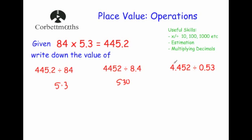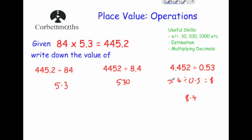And the last one: 4.452 divided by 0.53. Again, the answer will be linked to 84, and 0.53 is linked to the 5.3. I'll use estimation: round 4.452 to 4 and divide by 0.5. How many halves are in 4? There are 8 — so my answer is close to 8. Since the numbers relate back to 84, the closest I can get is 8.4, by placing the decimal point appropriately. So the answer is 8.4.